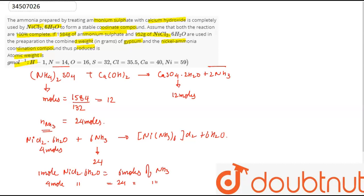So, we have to find out the total amount. That will be equal to: 12 multiplied by 172 — that is for CaSO₄·2H₂O — plus 4 multiplied by 232 — that is for NiCl₂·6NH₃ coordination compound. The total amount is equal to 2992 grams. Thank you.